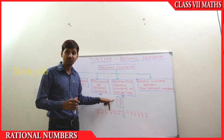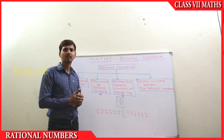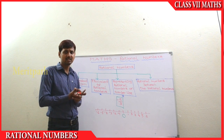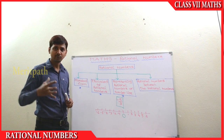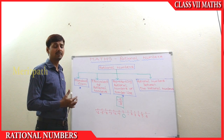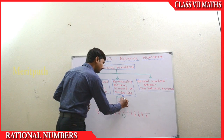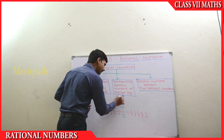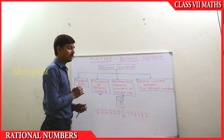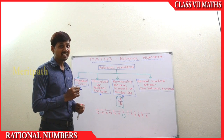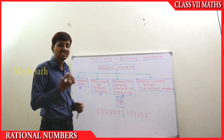That number is minus 5 by 3. How do we represent it? Let's find out what the numerator part of it is. It's minus 5. So let's find out where minus 5 is on the integer line.